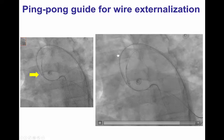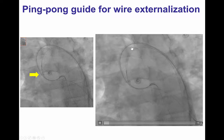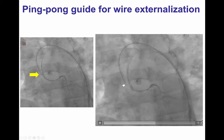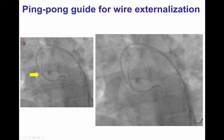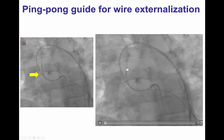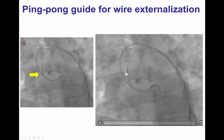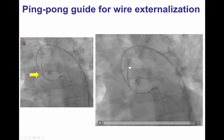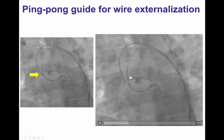We used the so-called ping-pong guide technique, which essentially means there are two guides engaging the same vessel. Here is the initial guide catheter through which the Corsair catheter is advanced. It goes into the LAD and then through the collateral into the second obtuse marginal and then through the circumflex back into the left main. The Corsair is then advanced into the second guide catheter, which minimizes tight space and interaction between the two microcatheters.